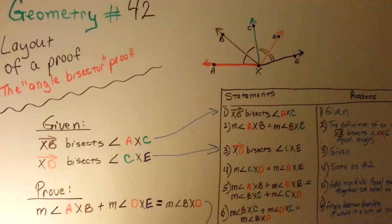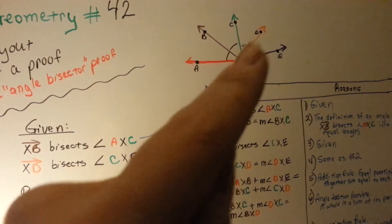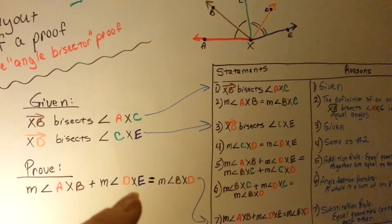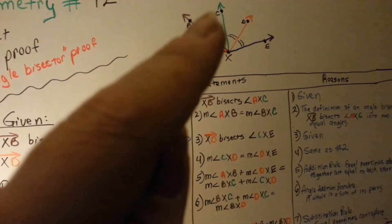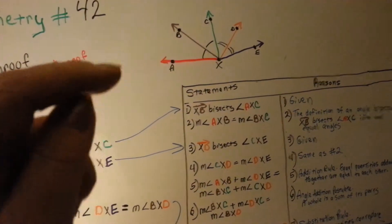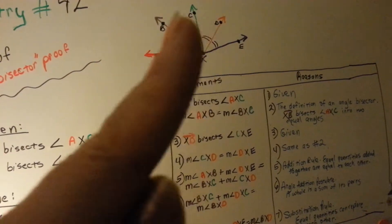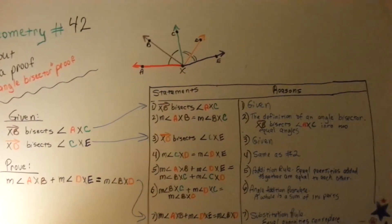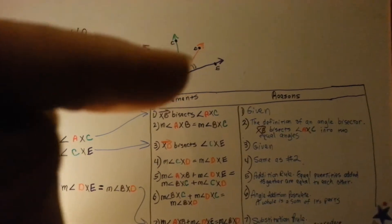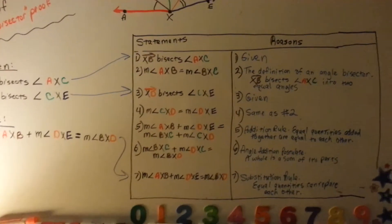We need to prove that the measure of axb — the first angle — plus the measure of dxe — the last one — is equal to the measure of bxd, these two together. Now, these two pairs are each equal to each other, and they're saying we have to prove that this one plus this one will equal these two. We can look at it and say, if this is one and this is one and this is two and this is two, then one plus two equals one plus two — but they want us to prove it with deductive reasoning using definitions, postulates, and theorems.